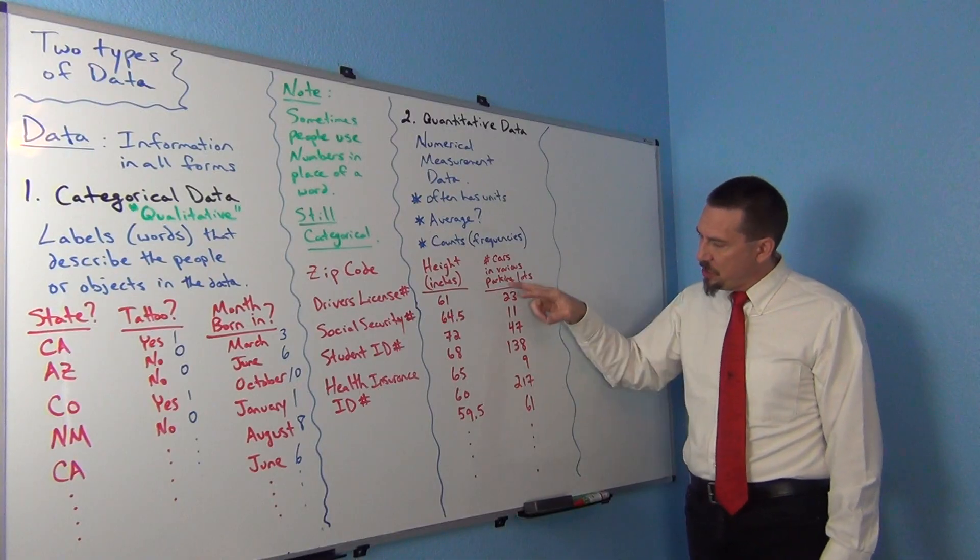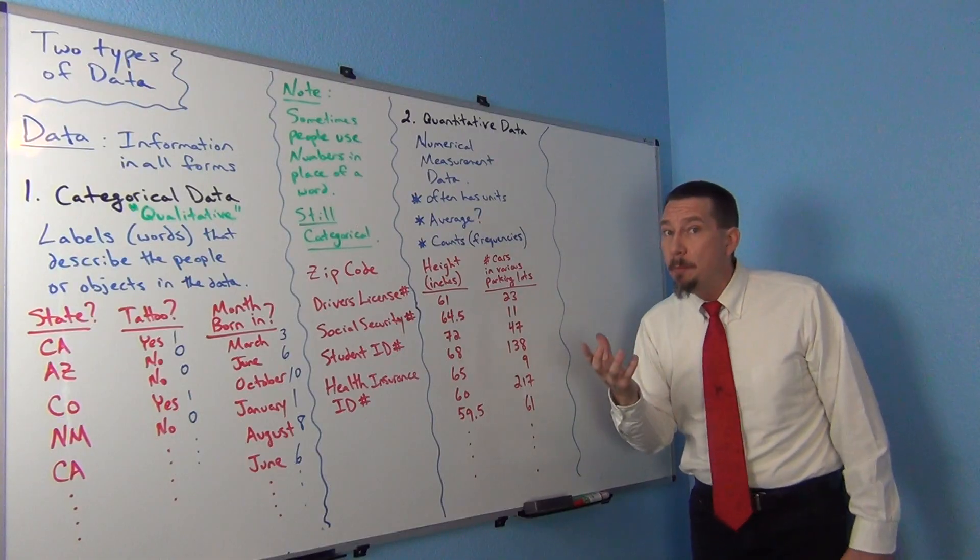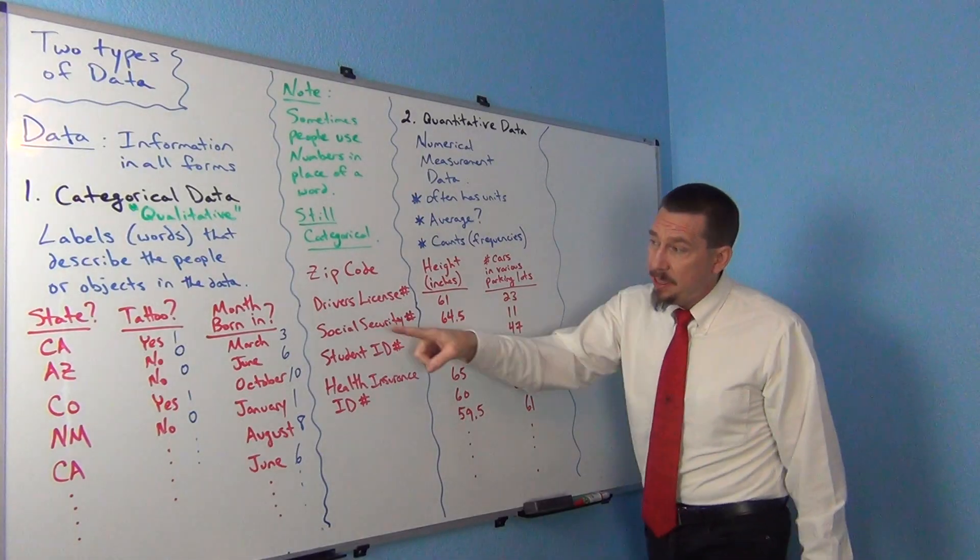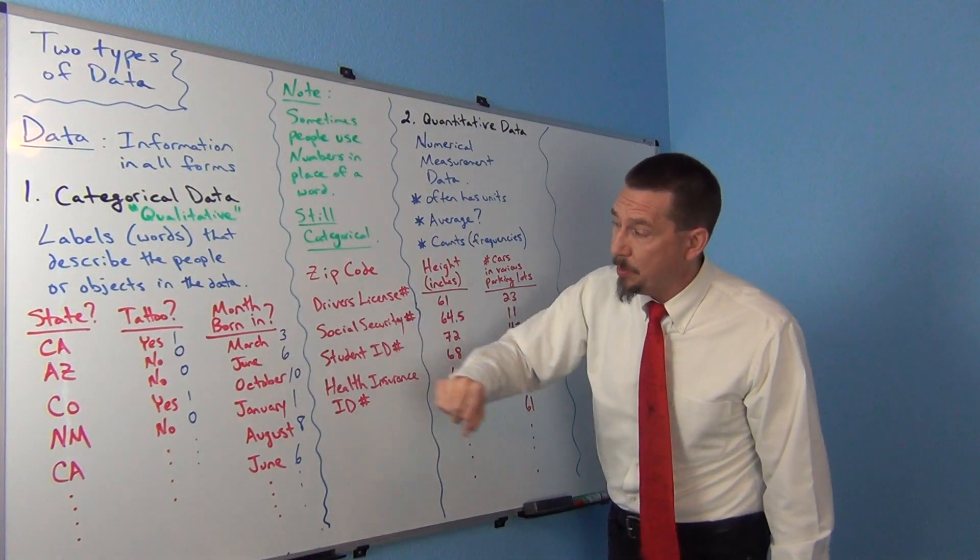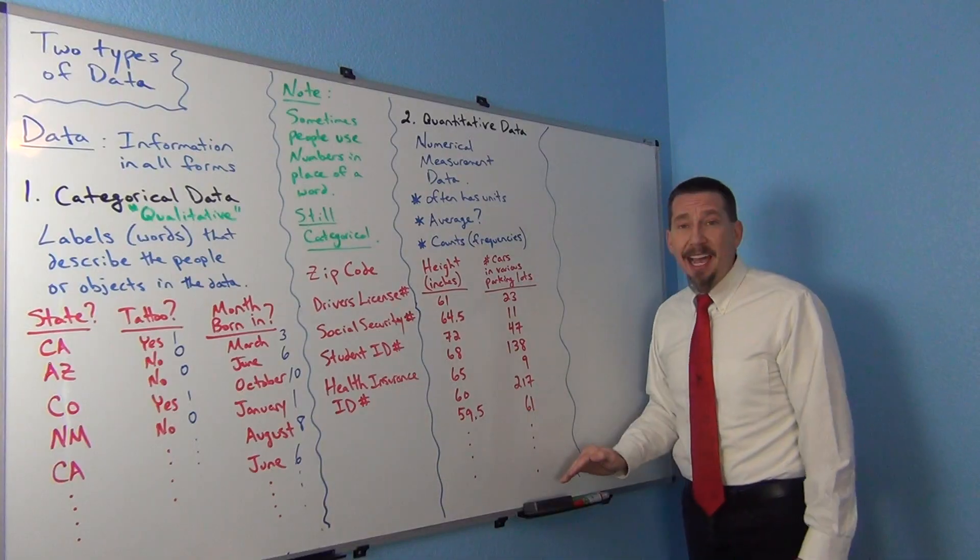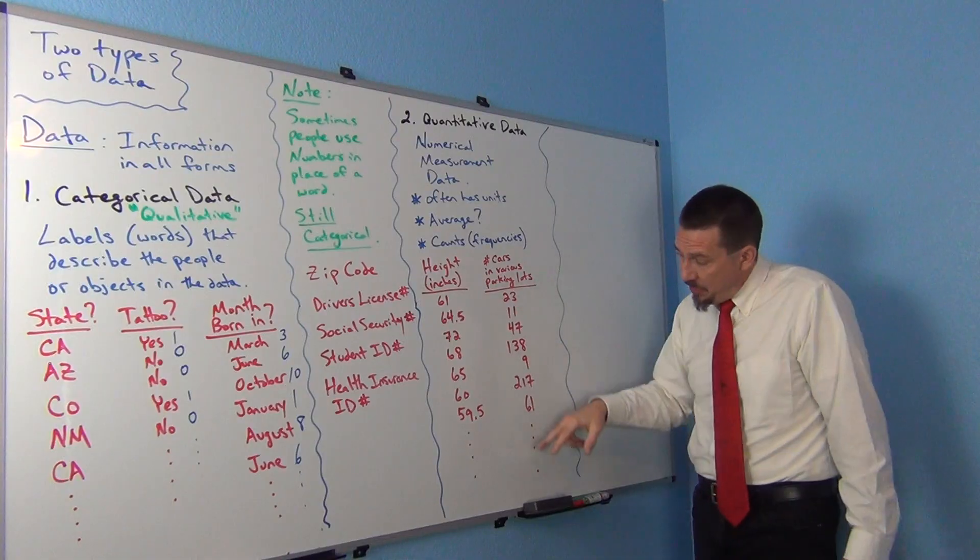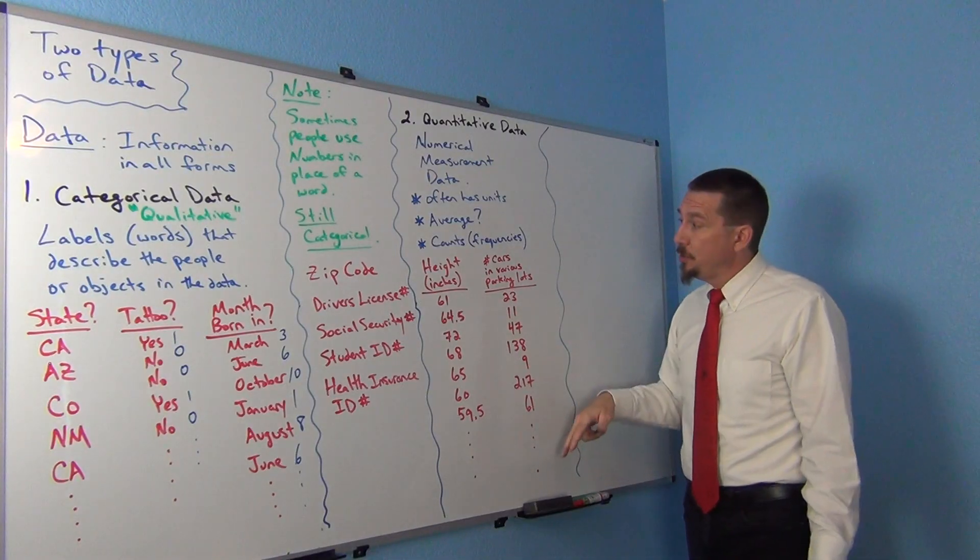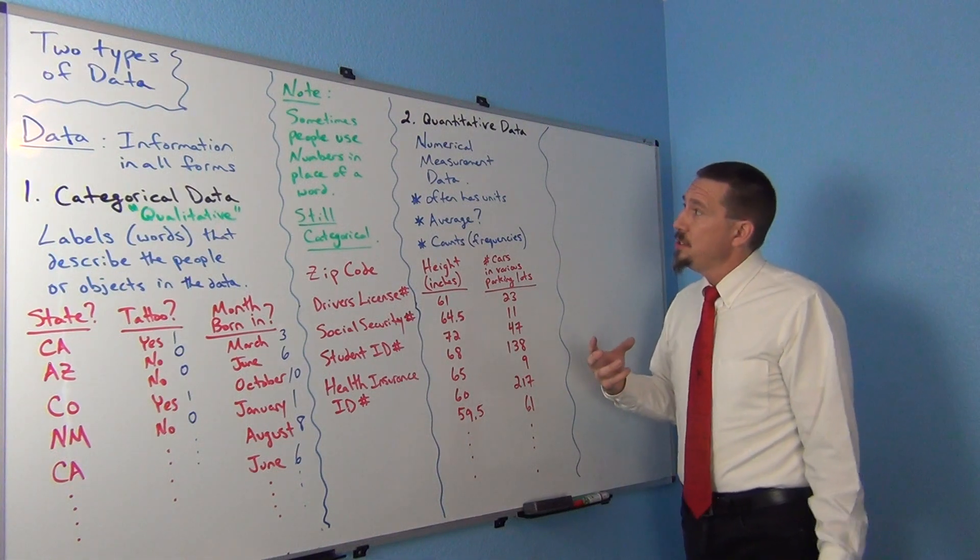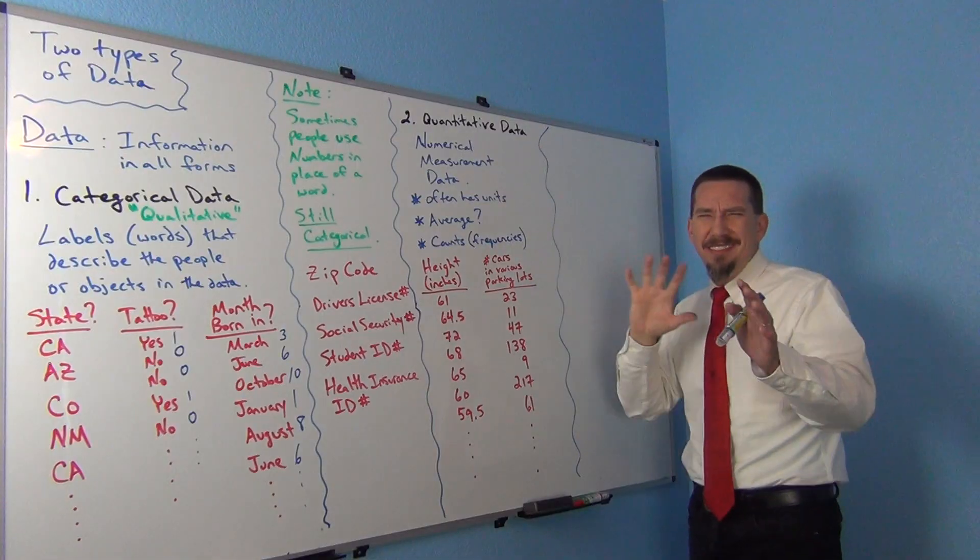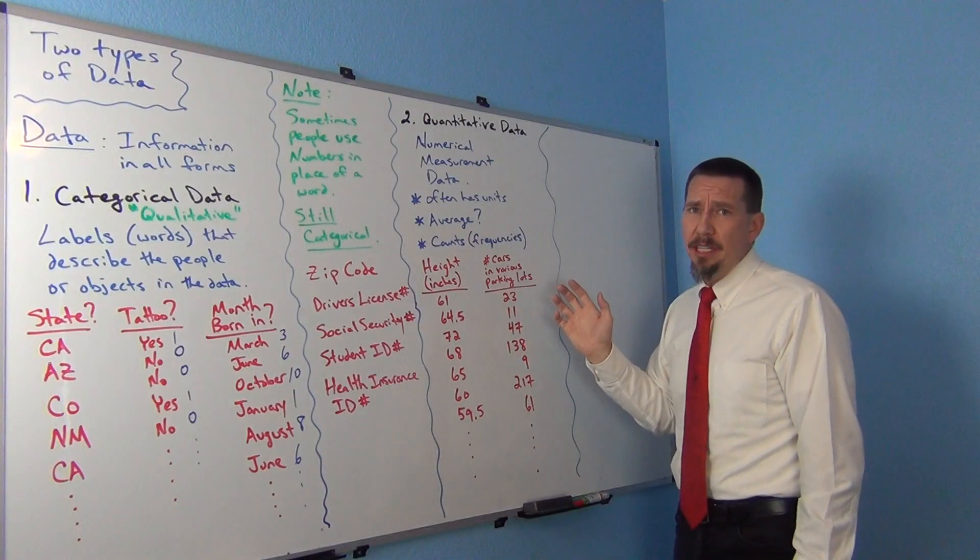I could also look at things like counts. A lot of times quantitative data are counts. So I might look at the number of cars in various parking lots. Maybe one parking lot had 23 cars in it. And another parking lot had 11 cars. Another parking lot had 47 cars. Another parking lot had 138 cars. And so on. So what we can see is here, this is a count from each parking lot. But the data set is made up of numbers. And the numbers really are measuring something. It's a number that's actually counting or measuring something. So it's got to be quantitative.